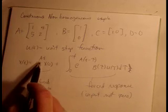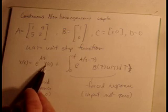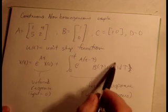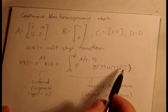The total response x of t is the unforced response, e to the A t, x of 0, where the input is 0, and then the forced response where the input is not 0, and we have to do our convolution integral.